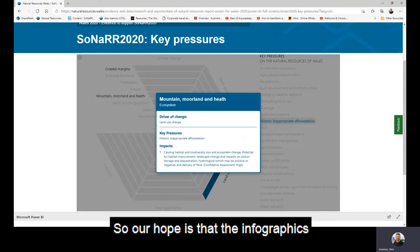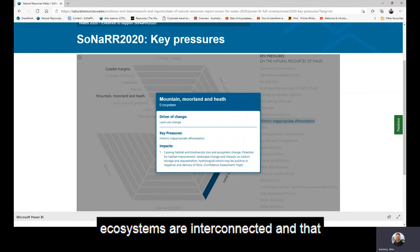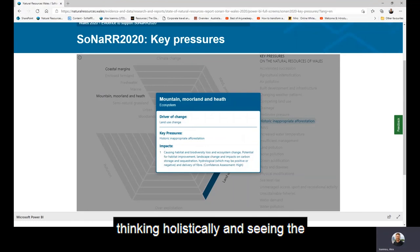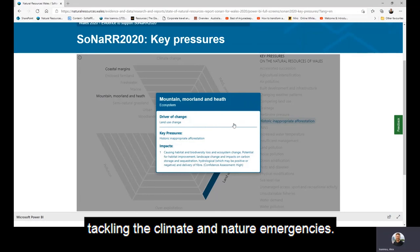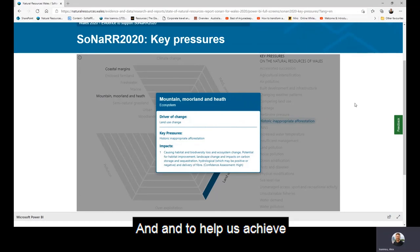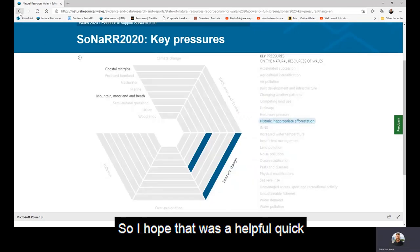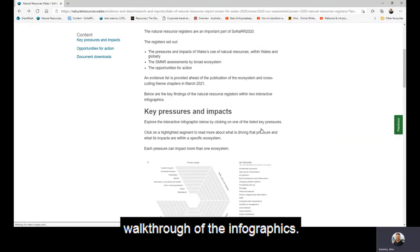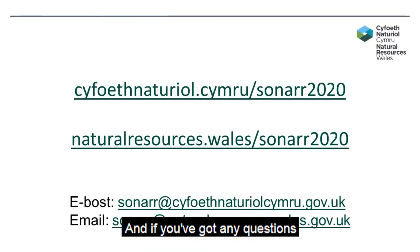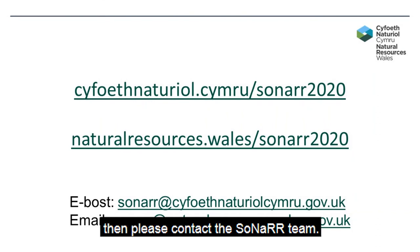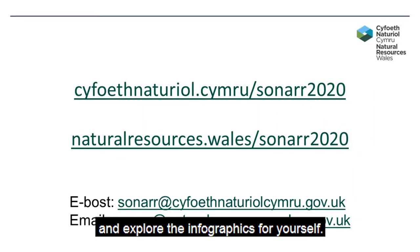Our hope is that the infographics will help us all remember that our ecosystems are interconnected, and that thinking holistically and seeing the connections is key when it comes to tackling the climate and nature emergencies and to help us achieve the four aims of SMNR. I hope that was a helpful quick walkthrough — if you've got any questions please contact the SONAR team. Thank you for listening, and get clicking and explore the infographics for yourself.